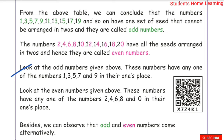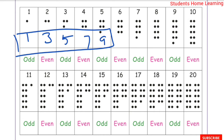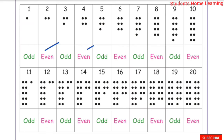These numbers have any one of the digits 1, 3, 5, 7, or 9 in their ones place — those are odd numbers.